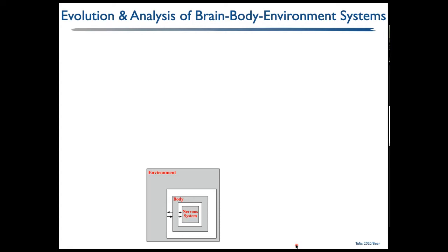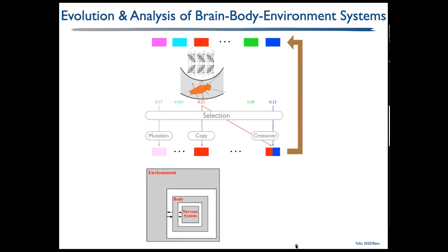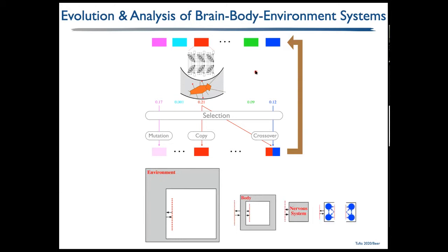Our work in this area has a synthetic component and an analytic component. The synthetic component uses evolutionary algorithms to generate brain-body-environment models, maintaining a population of parameters describing a recurrent dynamical neural circuit placed into a model body in a model environment, evolved to produce some behavior of interest. Once we produce these models, we take them apart using dynamical systems theory and information theory.